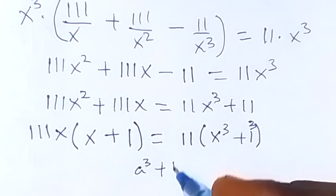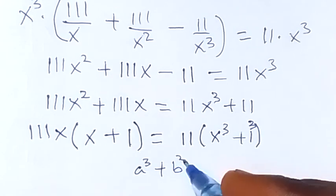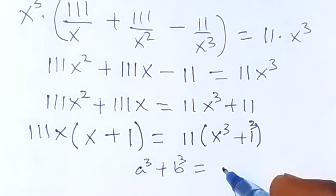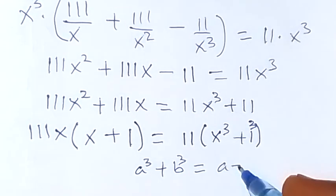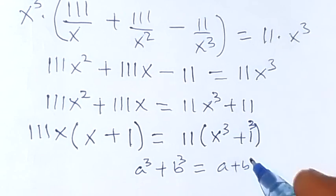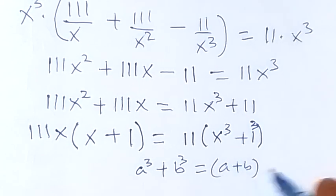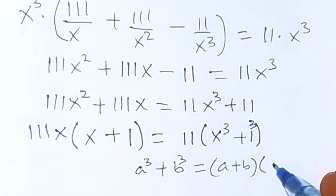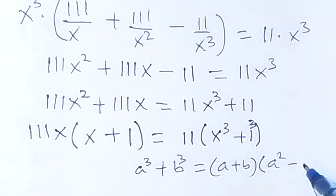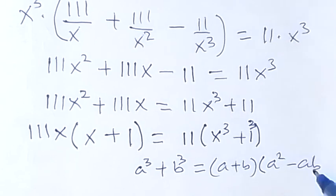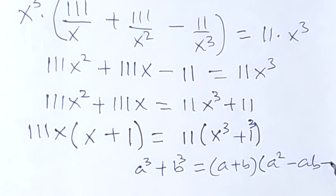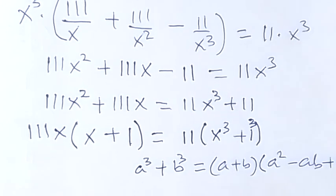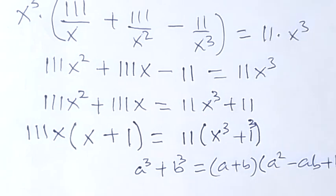Using the identity a³ + b³ = (a + b)(a² − ab + b²), where x stands as a and 1 stands as b, we can expand x³ + 1 accordingly.